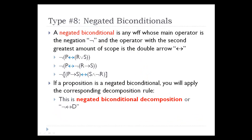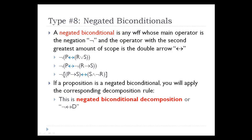The same thing will be true for negated biconditionals. The operator with the greatest amount of scope is the negation. We then look at the operator with the next most amount of scope, and in three examples what we see is the double arrow. So we can classify these propositions as negated biconditionals. Once we've identified these propositions as negated biconditionals, we apply the corresponding rule, which is negated biconditional decomposition.